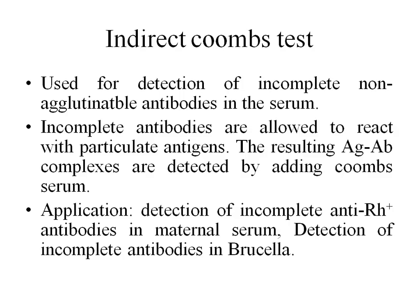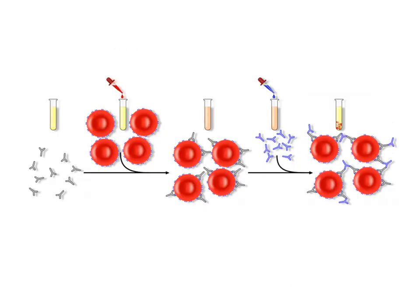In the indirect Coombs test, we are going to detect the presence of anti-RH antibodies in the maternal serum. So we take the maternal serum and mix it with RH positive RBCs. If the maternal serum has anti-RH antibodies, all the RBCs will be coated with the anti-RH antibodies. In the third step, we are going to add anti-human immunoglobulins.